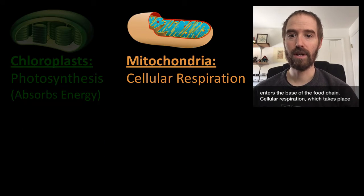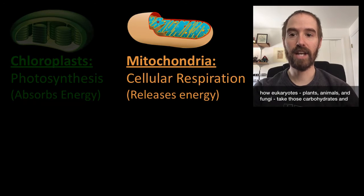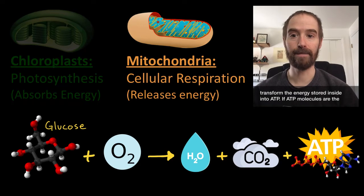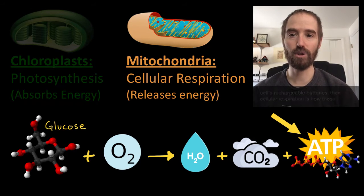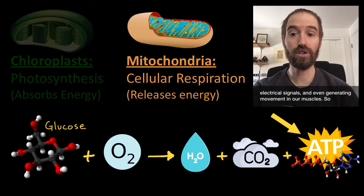Cellular respiration, which takes place in the mitochondria, is an energy releasing chemical reaction. This is how eukaryotes — plants, animals, and fungi — take those carbohydrates and transform the energy stored inside into ATP. If ATP molecules are the cell's rechargeable batteries, then cellular respiration is how those batteries get recharged. Our cells use ATP for everything from transporting and constructing molecules, to sending chemical and electrical signals, and even generating movement in our muscles.